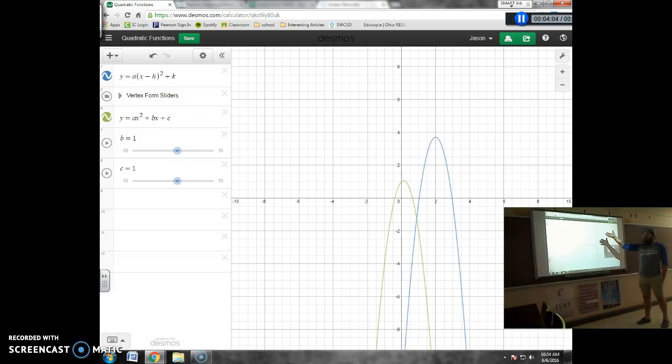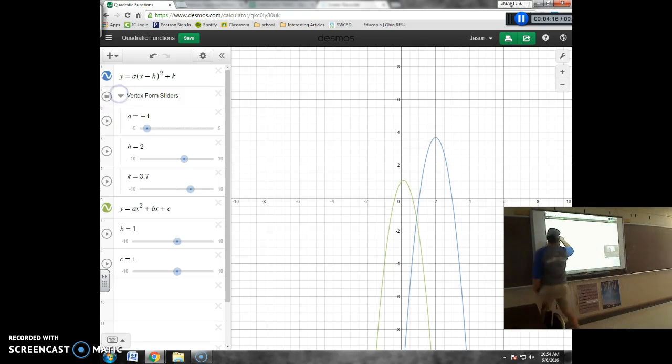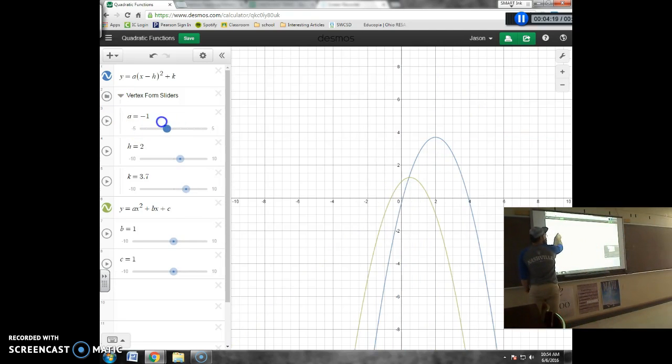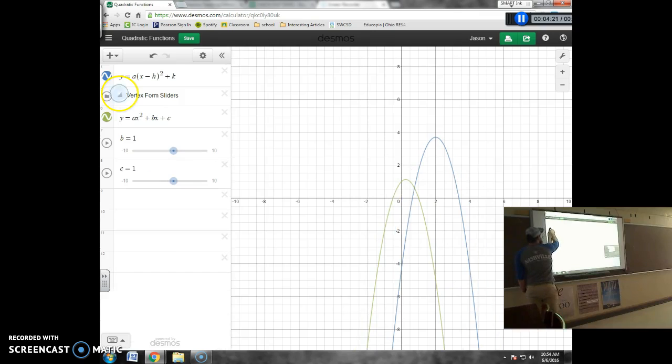Now, since we're reusing a, it's already in the vertex form slider. Whatever the a value is in vertex form, it's going to be the same in standard form, which is what we're looking at now. The a value, again, if I go in here and I move this a value, it changes both graphs. But now, my b value and my c value are changing just that green curve right there.